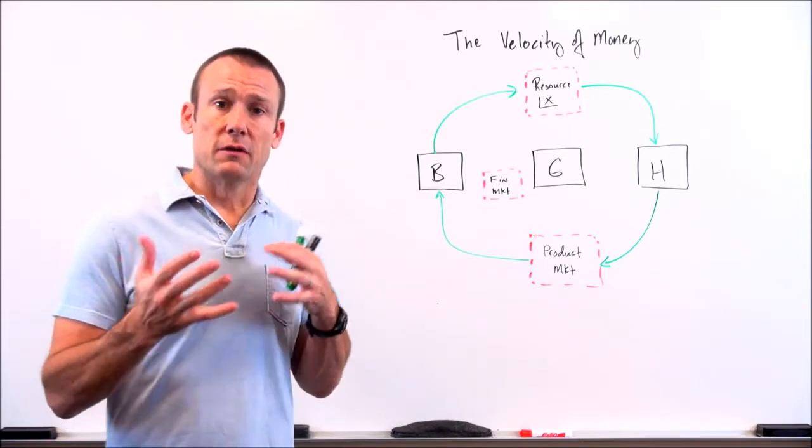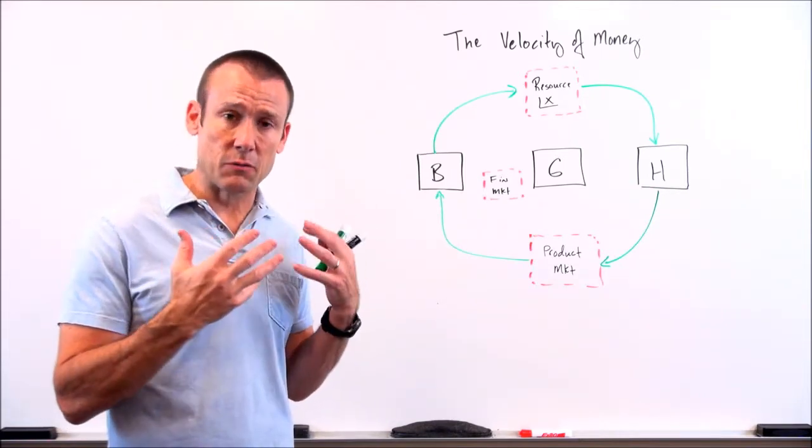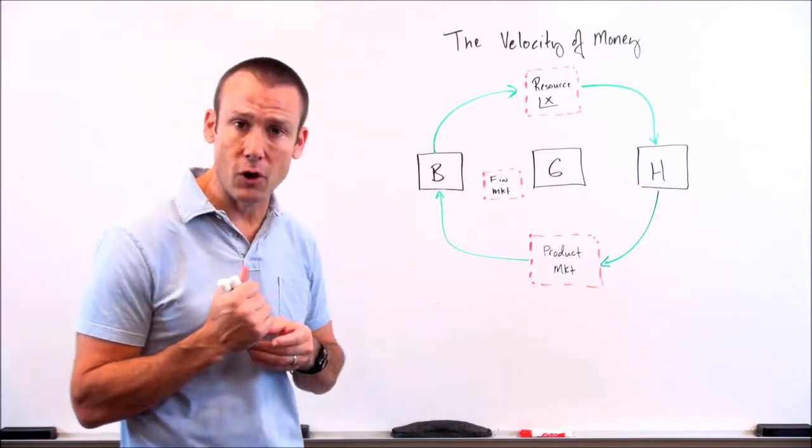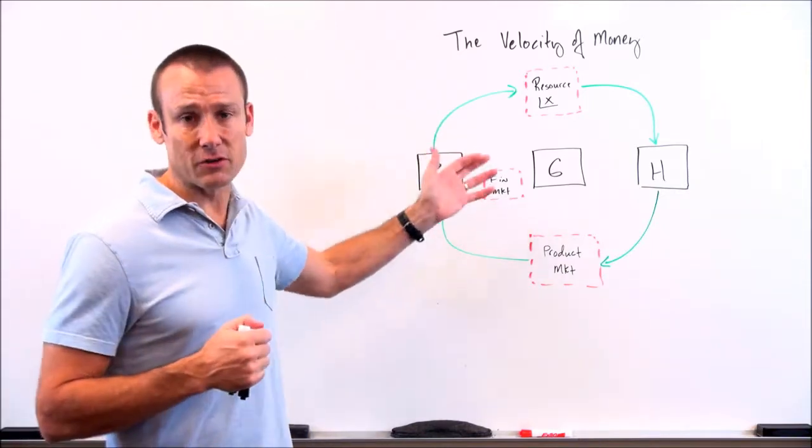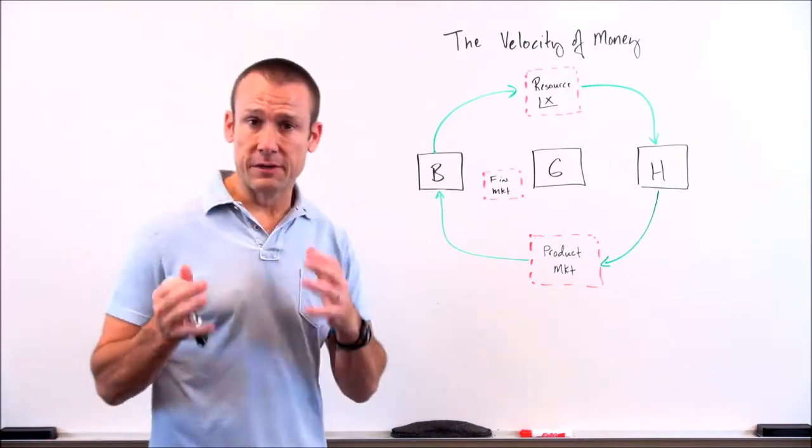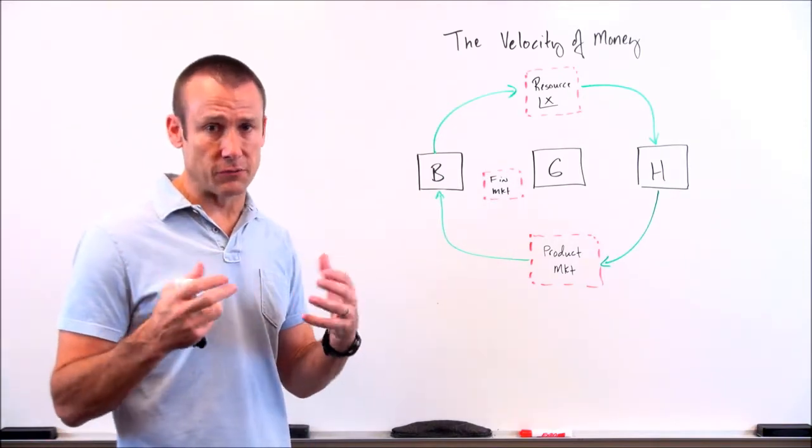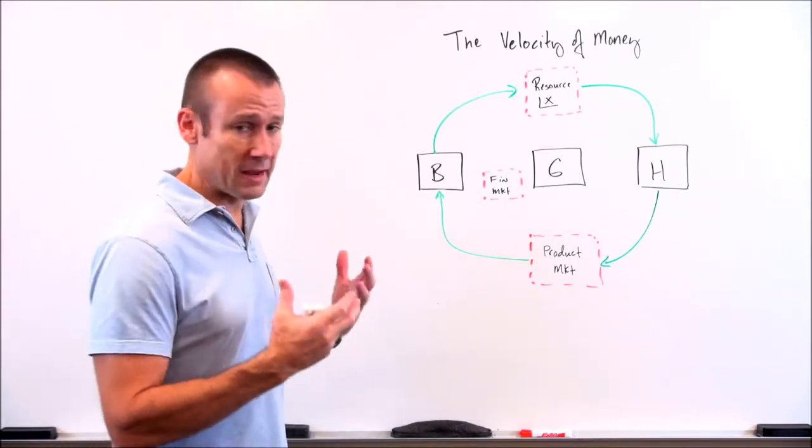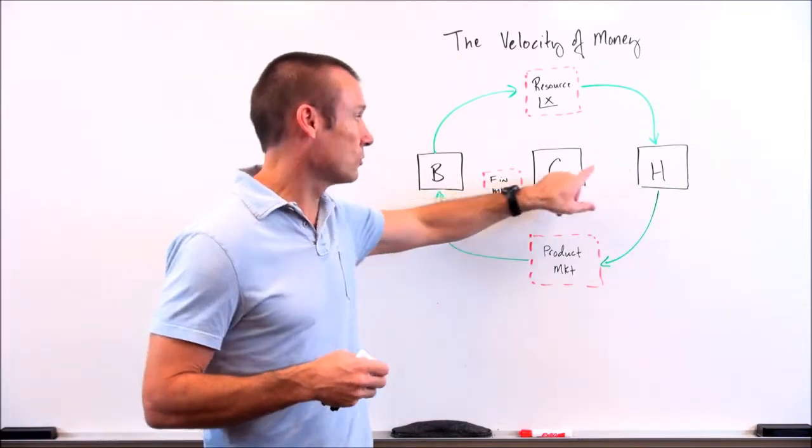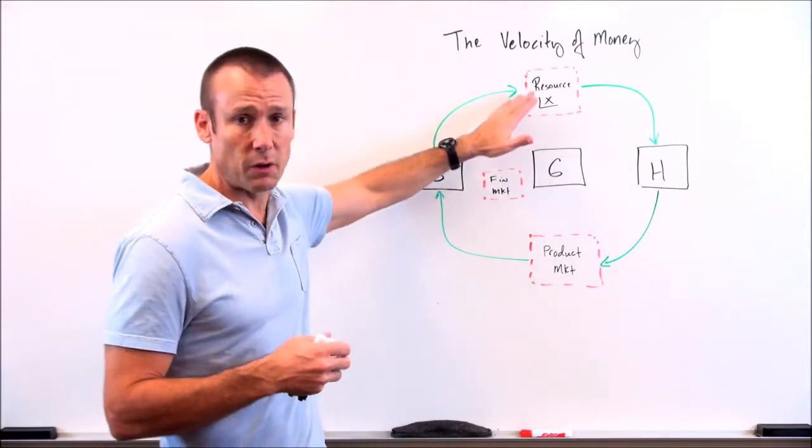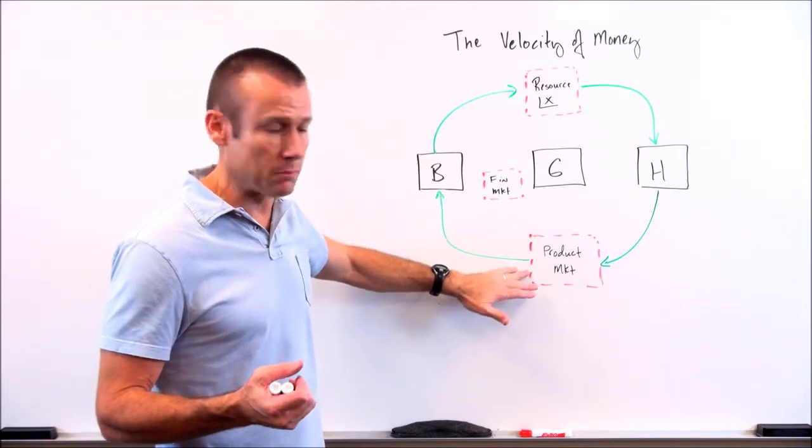To kind of teach you the velocity of money and why it's so important, I've put a circular flow up here on the board. Now, in different textbooks, circular flows look differently, but they all have these same basic parts. Households, government, businesses, resources, resource markets or factor markets, product markets.